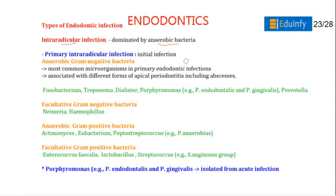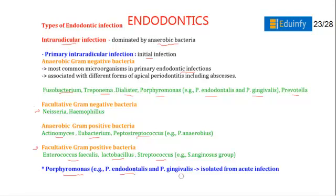In primary intraradicular infection, all types of microbiomes are present. The most common microorganisms are anaerobic gram-negative bacteria including Fusobacterium, Treponema, Dialister, and Porphyromonas (P. endodontalis or P. gingivalis), as well as Prevotella. Facultative gram-negative bacteria include Neisseria and Haemophilus. Gram-positive anaerobes include Actinomyces, Eubacterium, and Peptostreptococcus. Facultative gram-positive bacteria include Enterococcus faecalis, Lactobacillus, and Streptococcus. Porphyromonas endodontalis and P. gingivalis are isolated from acute infections.